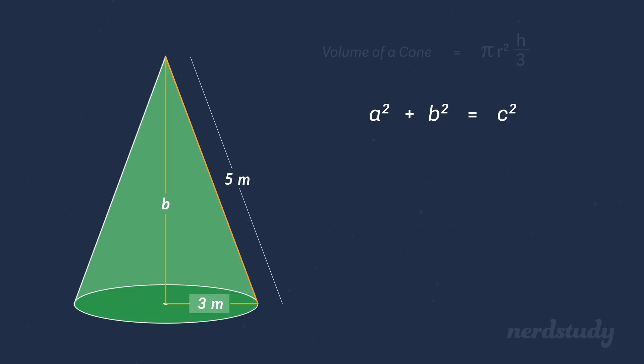So what we can do from here is use the Pythagorean theorem to find the leg length. We have the value of a and c, so let's plug them in to get 3 squared plus b squared equals 5 squared.